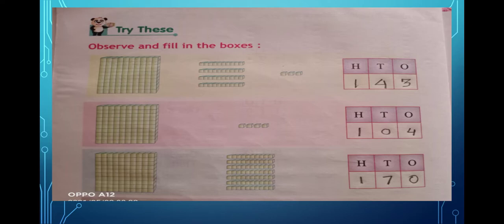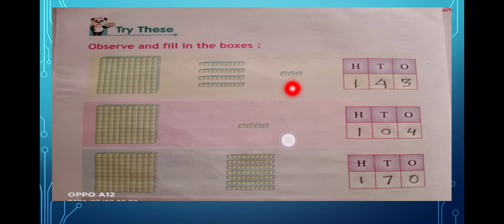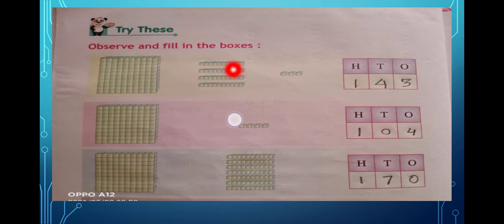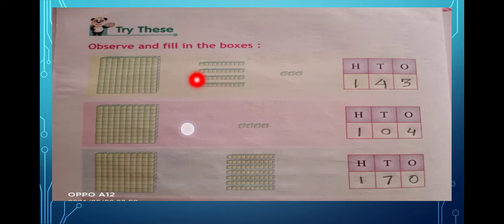Here you can see ones, tens, and hundreds. The separated blocks are for ones. The blocks that are joined together but separated from pairs are for tens, and these are for hundreds.